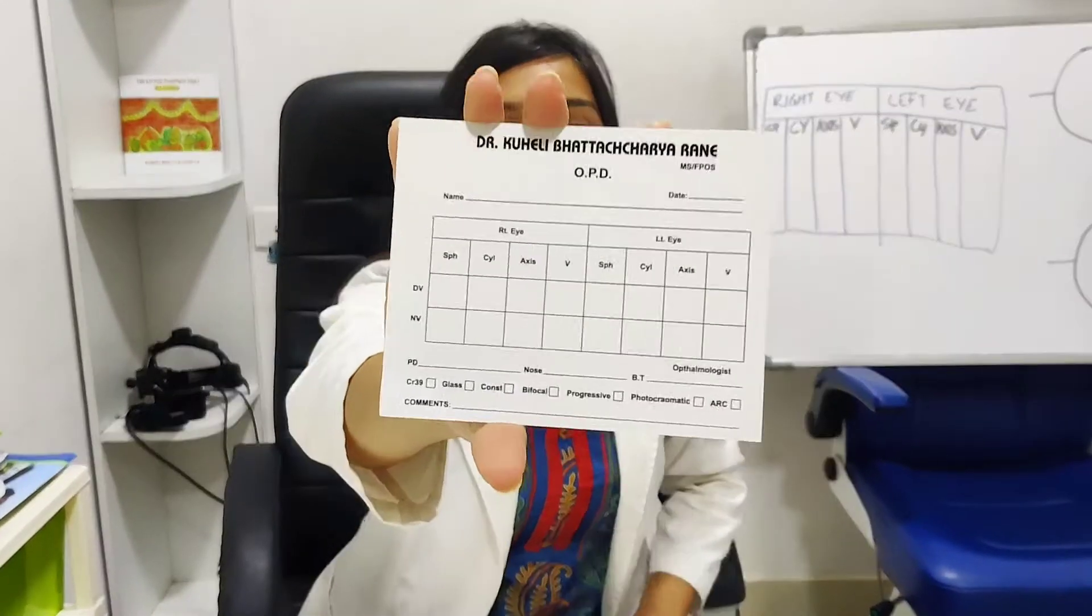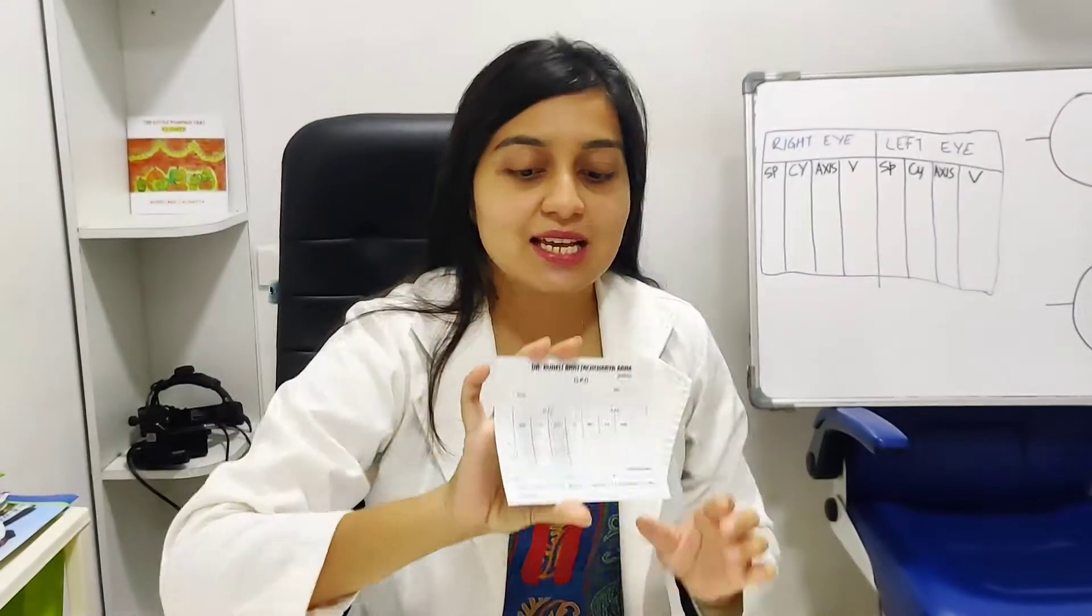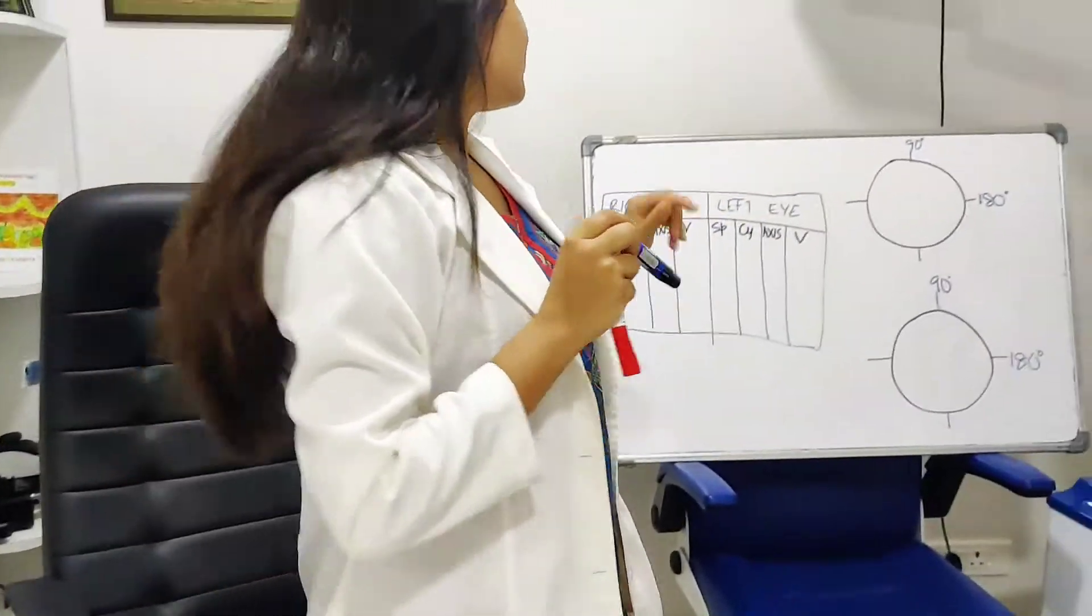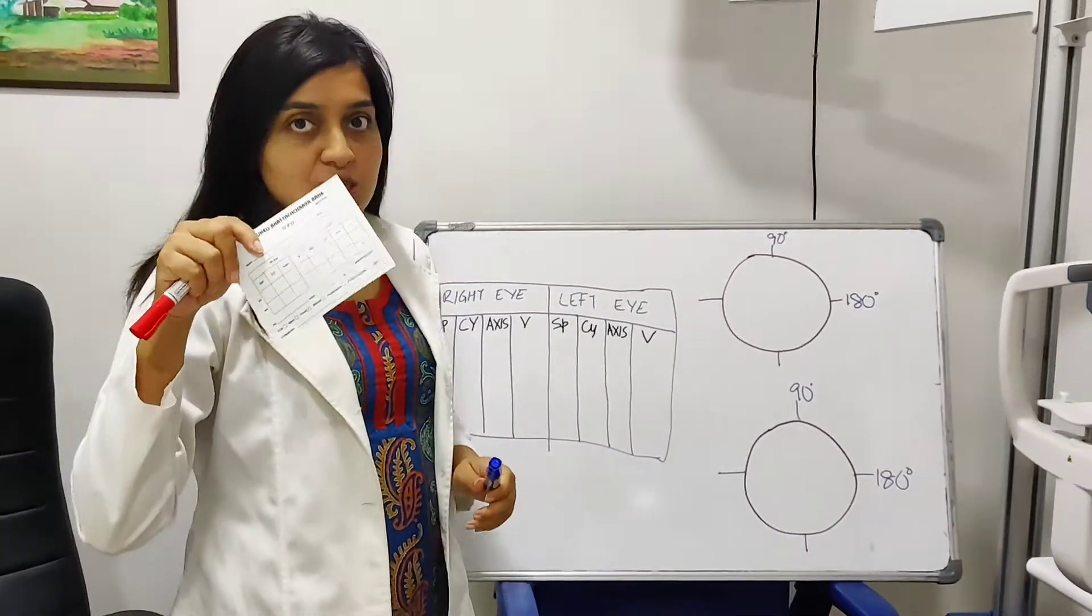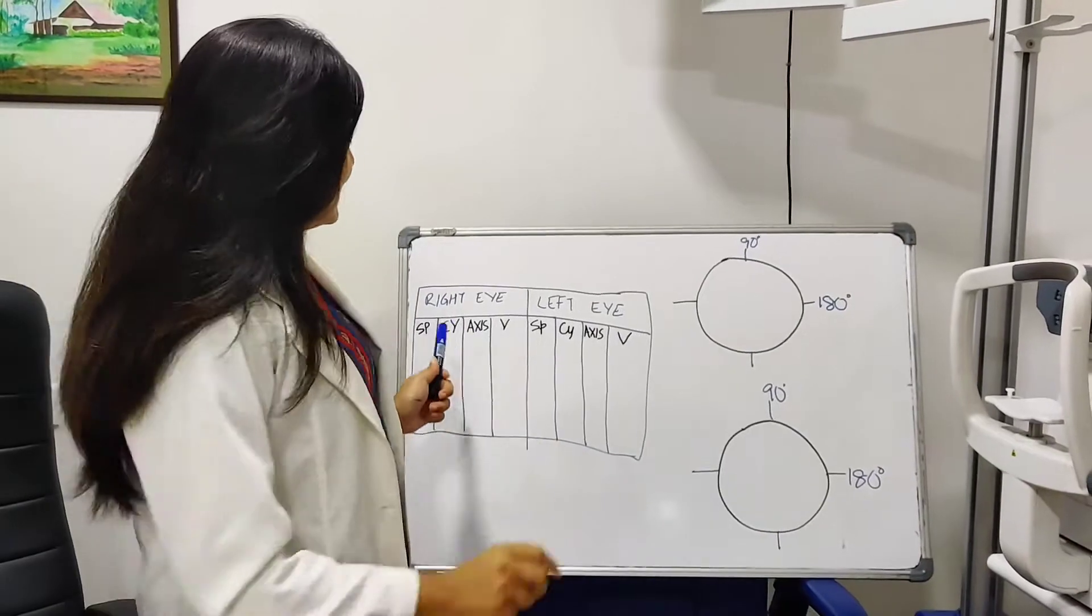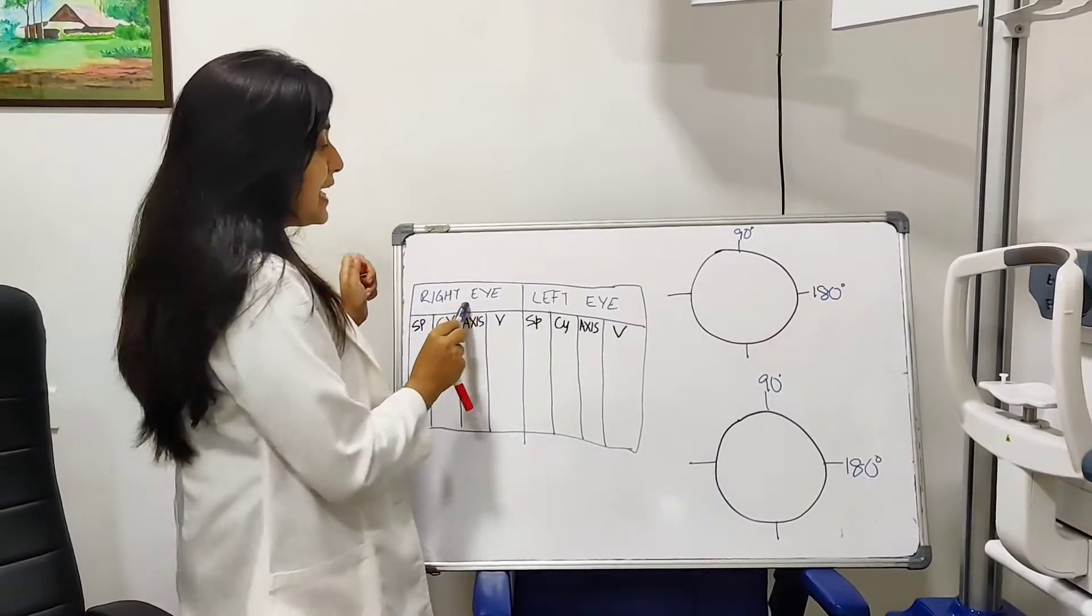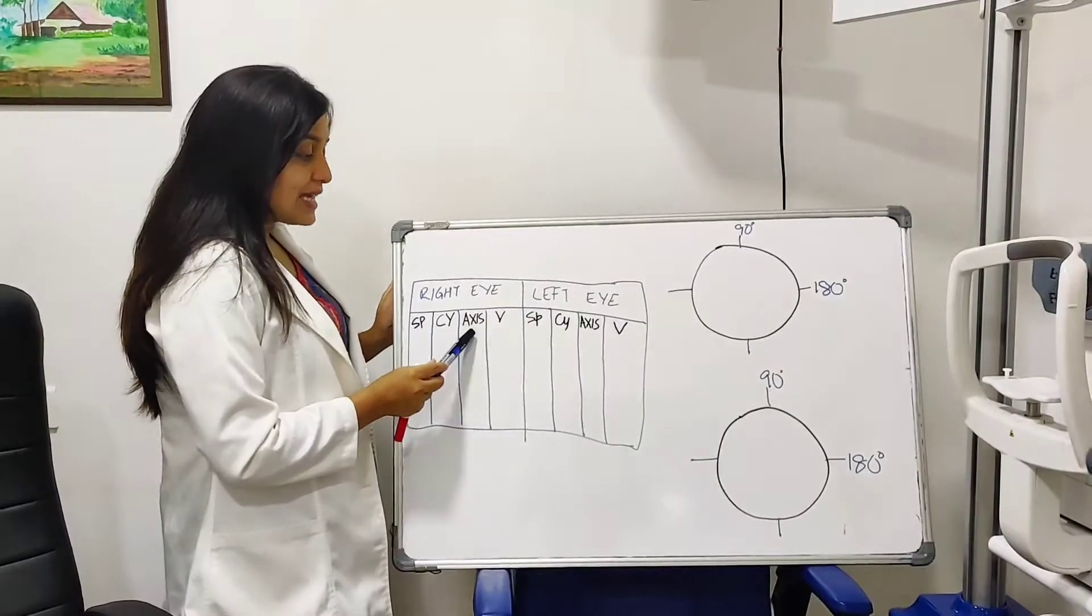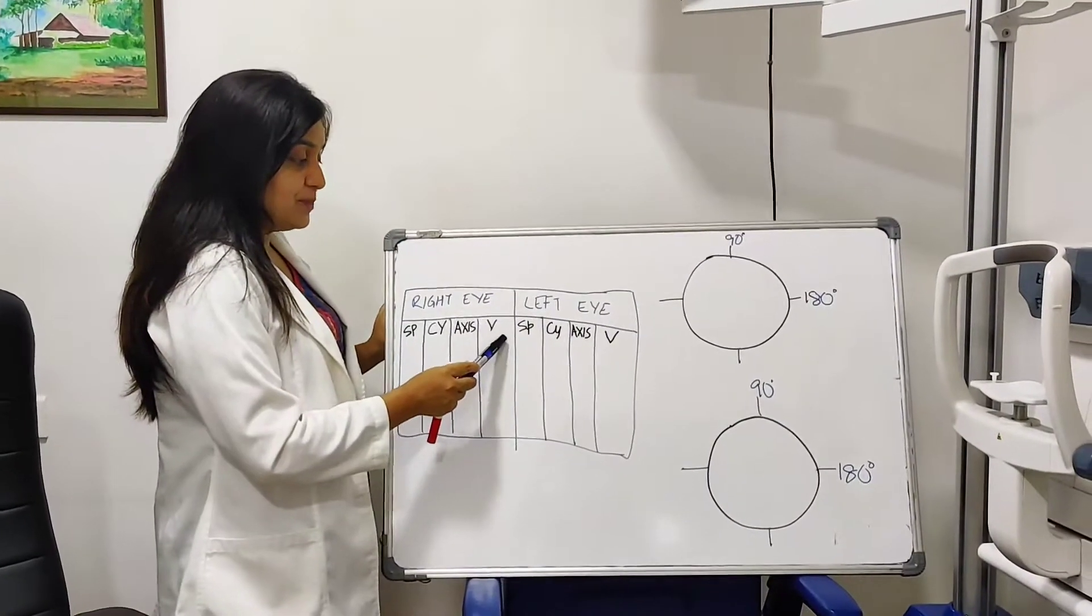So whenever you have your eyes checked, you get a glasses prescription like this. Let's move over here. Let me explain it to you here. So a typical glasses prescription will have these columns. Right eye, left eye, spherical, cylinder, the axis and the vision.